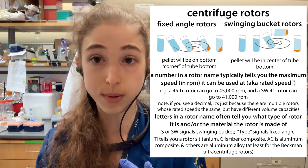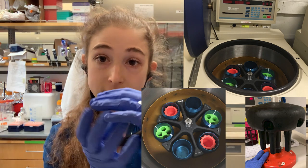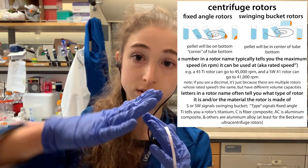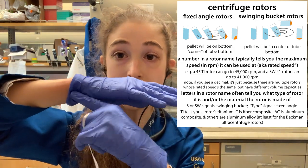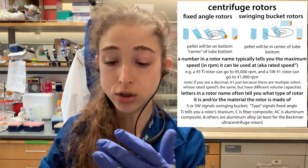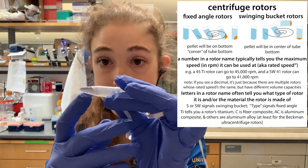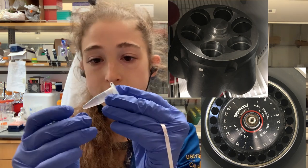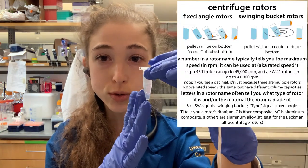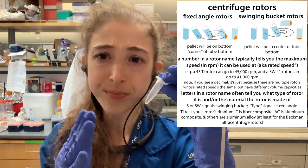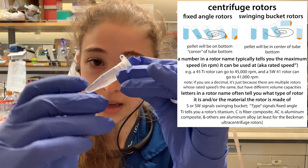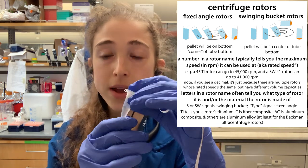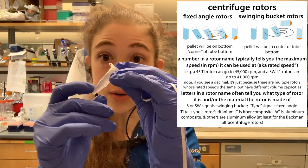There are swinging buckets, where the tubes are held in actual buckets — like a jellyfish ride, the tube swings out as it spins, so the pellet is collected at the bottom of the tube. There are also fixed angle centrifuges, where the tube is held at roughly a 20 to 40 degree angle, and the pellet ends up at the top edge of the tube bottom. There are also near-vertical fixed angle rotors, but the angled ones are most common.